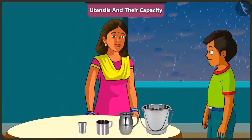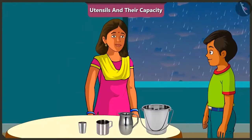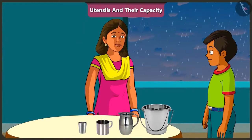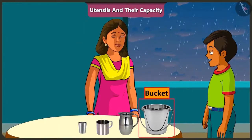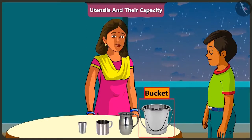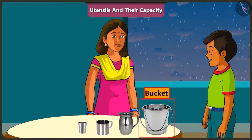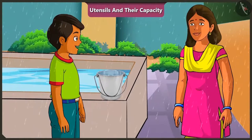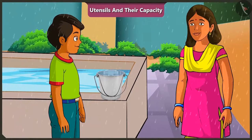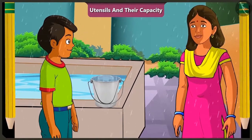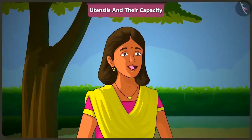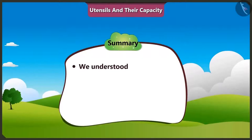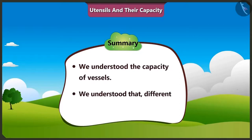Hey, look, it has started raining. Mishtu, just tell me, which vessel should we use to collect rainwater? We should collect it in this bucket, because the bucket has the highest capacity, and with the help of this bucket, it will be possible to fill the tank much faster. So children, today along with Mishtu we understood the capacity of vessels and that different vessels have different capacities.